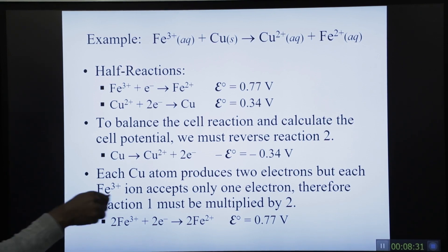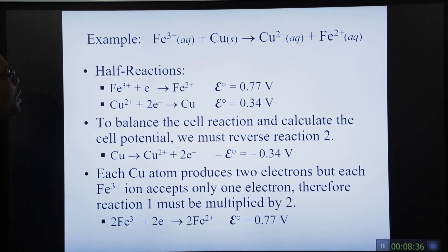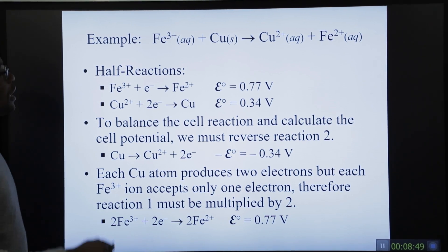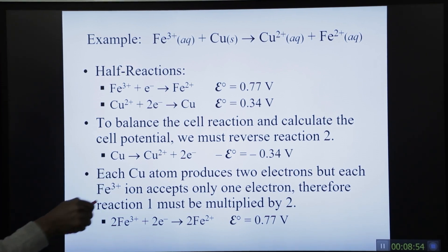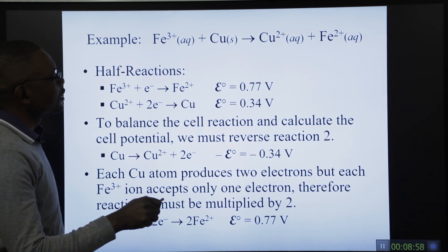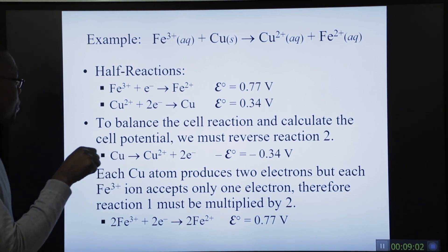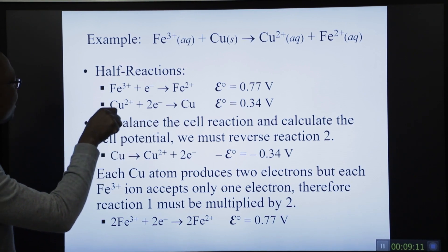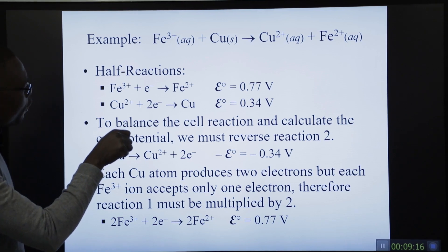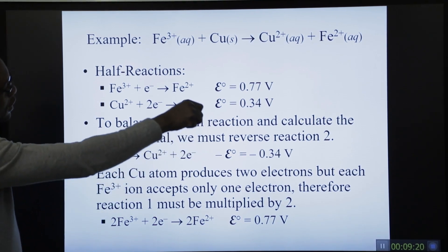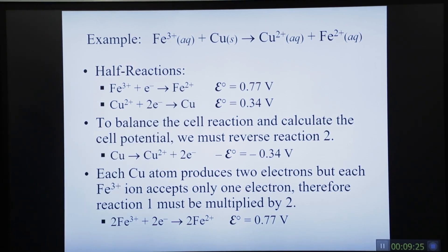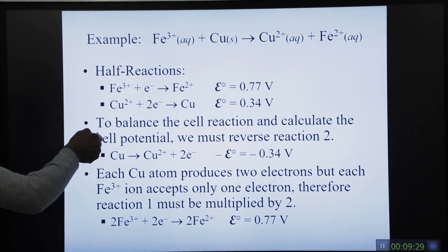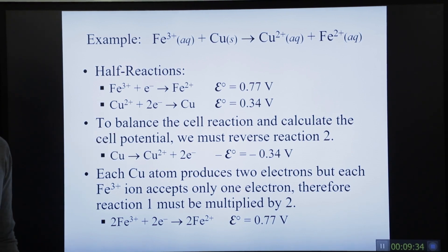Take for example iron and copper as materials. Iron³⁺ ions are in solution while copper is a solid plate used as an electrode. Copper loses electrons to iron such that copper becomes Cu²⁺ and Fe³⁺ becomes Fe²⁺. This is not balanced because we need two Fe³⁺ ions to react with one copper atom to give Cu²⁺ and 2 Fe²⁺.